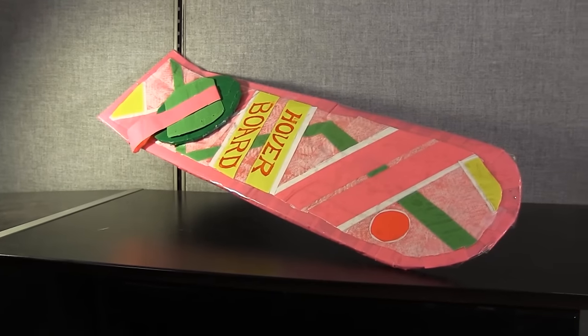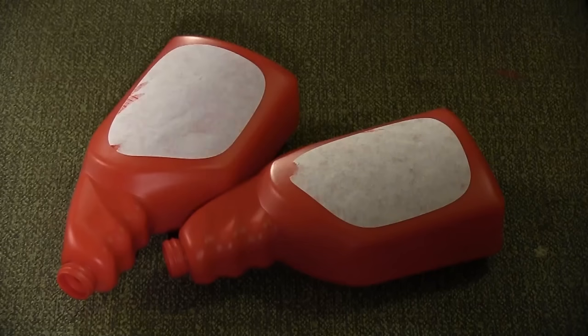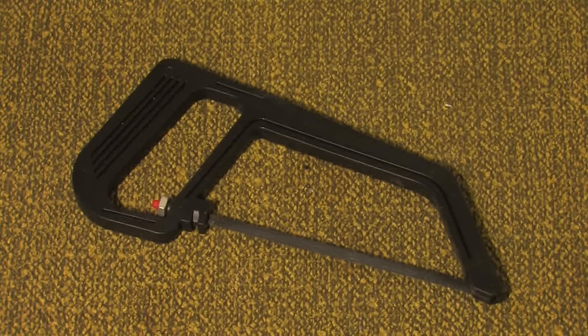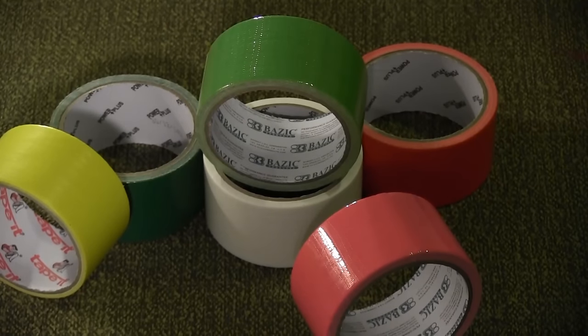The materials for this prop include cardboard, two detergent bottles, two dowel rods, a handsaw, pink, neon green, forest green, yellow, white, and red duct tape.